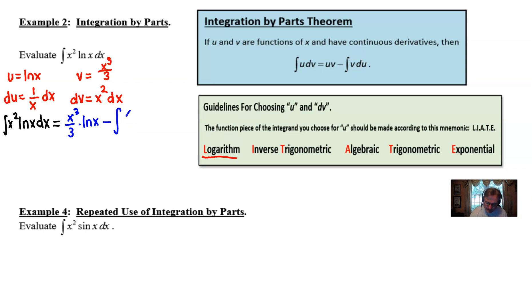So v times the du, if I just write those down, would be x cubed over 3 multiplied by 1 over x times dx. Well what we're going to notice here is that we can work on this integral, simplify it a little bit, and probably reduce it to something that's easily integrated. So we still have our x cubed over 3 times our natural log, and at this point when we simplify this we find that we have one third times x squared with respect to x, and that's going to make for a fairly easy thing to integrate.